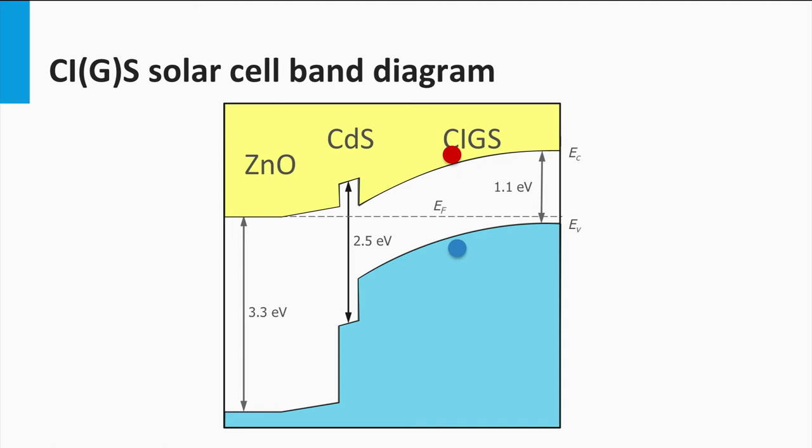This bandgap is accomplished by a ratio of gallium to indium of around 0.3. The n-type cadmium sulfide buffer layer has a bandgap of 2.5 eV. Since the bandgap of the n and p-type junction materials are different, this CIGS cell can be considered as a heterojunction.